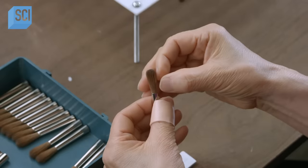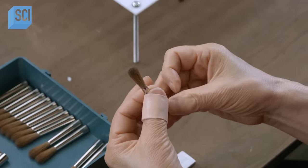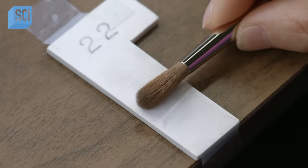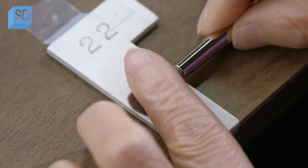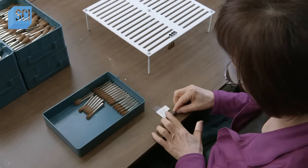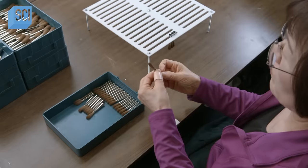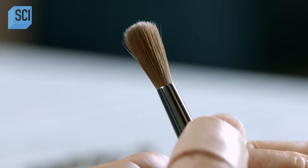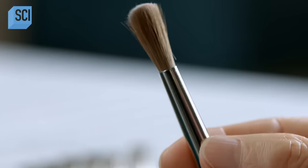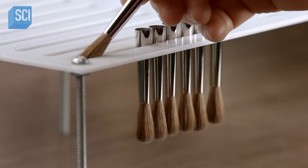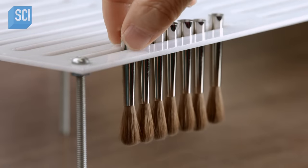After removing stray hairs, she aligns the end of the ferrule with the edge of the nearly one-inch-long template and pulls out or pushes in the hairs until their tips align with the opposite edge of the template. She completes her specialized work by suspending the assembled brush head from a rack.